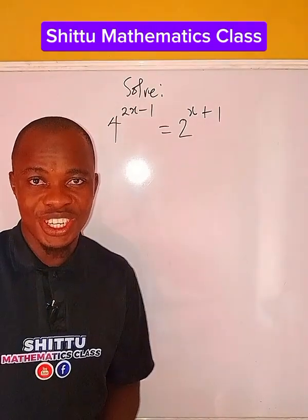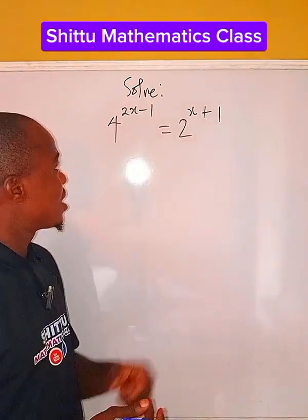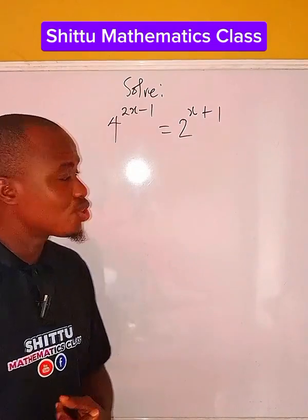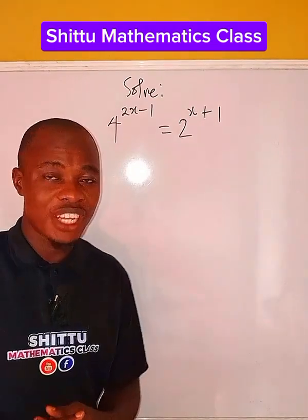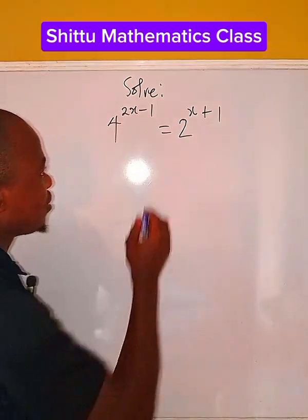Let's see how we are going to solve this exponential equation. The question says 4 to the power of 2x minus 1 equals 2 to the power of x plus 1. So what's the value of x?